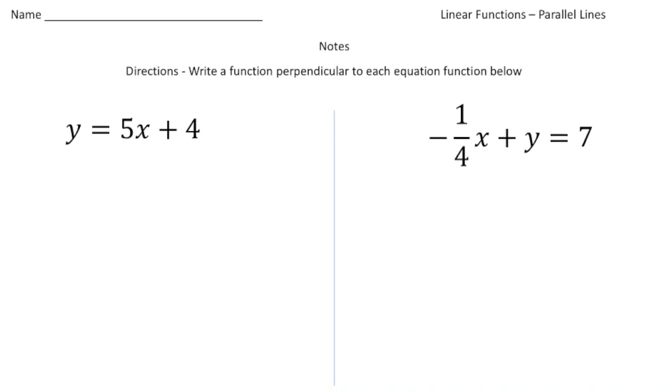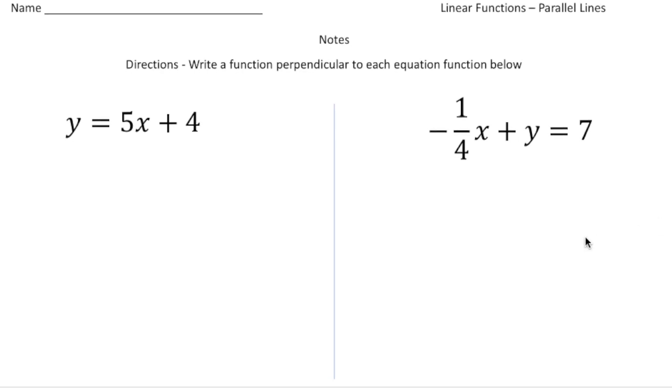And it says directions. It says, write a function perpendicular to each equation function below. Alright, so here I know I have a slope that's really five over one. So the reciprocal of five over one is one-fifth. So my equation is going to be y equals one-fifth. But remember, it has to be a negative one-fifth. So it's going to be negative one-fifth x. And then you could use any y-intercept value you want. So I'm going to say plus, say, two.